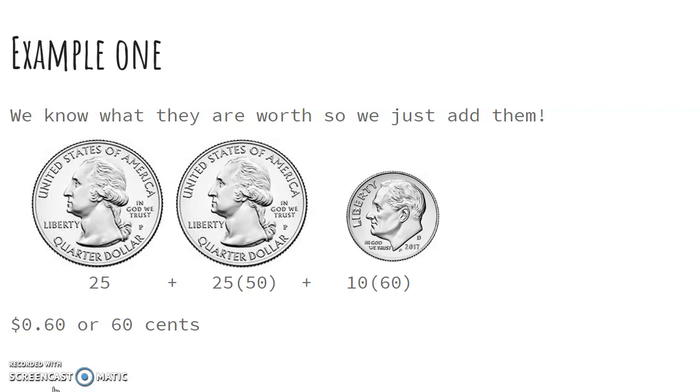So let's just take example one. I know I have two quarters and a dime. So the first thing I'm going to do is I'm just going to pretend my dime isn't here and I'm going to skip count my quarters because I know they're worth the same. So I'm going to skip count 25, 50, because 25 plus 25 is 50.